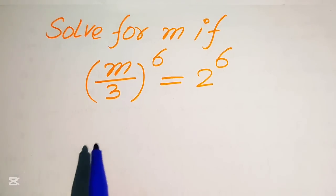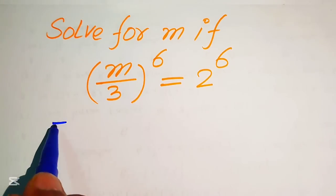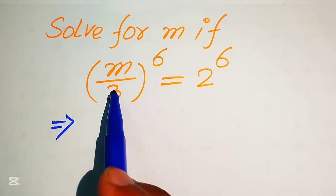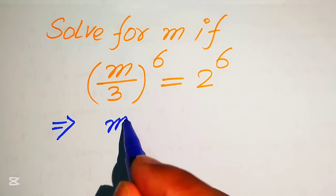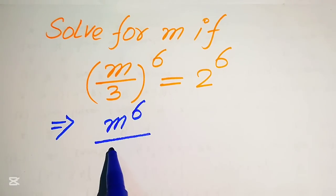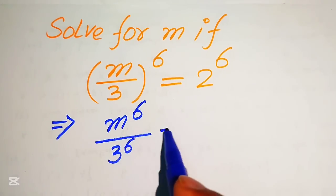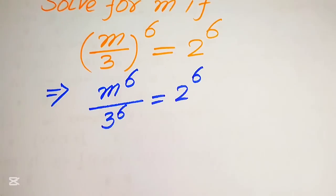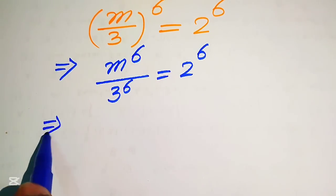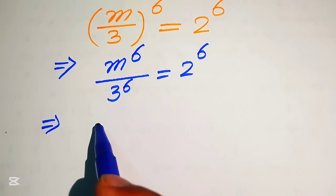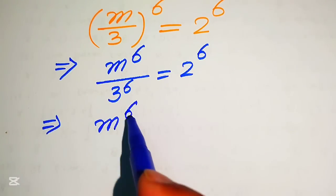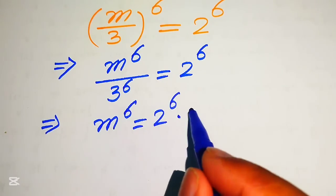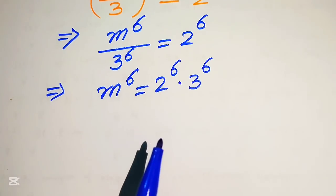First we simplify the terms. We can break this exponent and write it separately on both values. It will be written as m to the power of 6 divided by 3 to the power of 6 equals to 2 to the power of 6. Then we move 3 to the power of 6 to the right hand side, giving m to the power of 6 equals to 2 to the power of 6 multiplied by 3 to the power of 6.